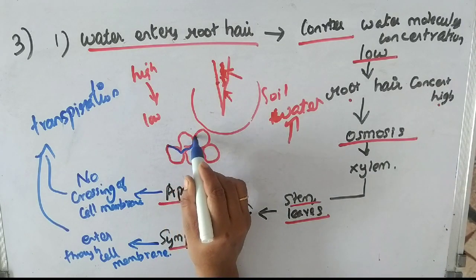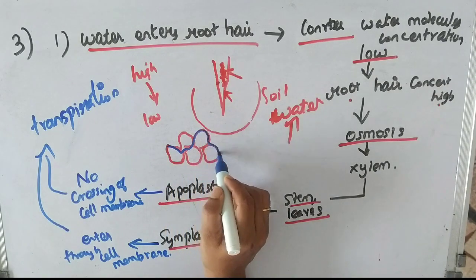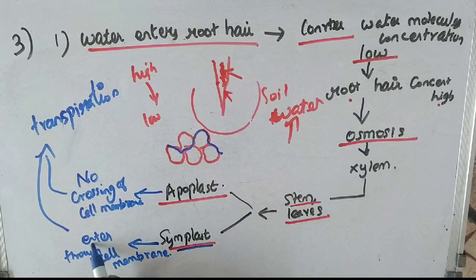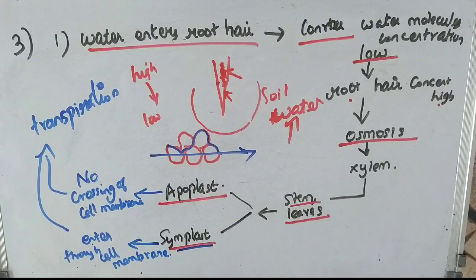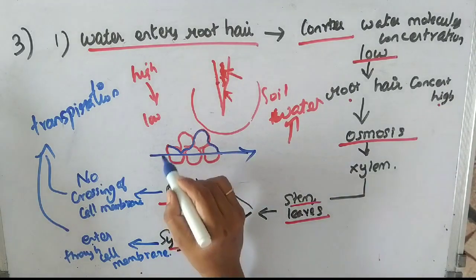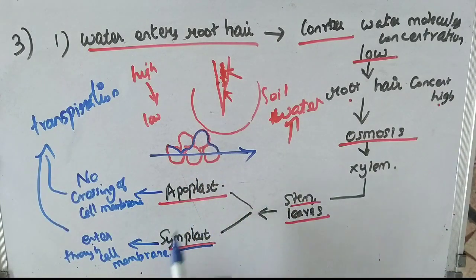The cell membrane is crossed. But the symplast pathway means going through the cell membrane, crossing from one cell to the next through the cell membrane.